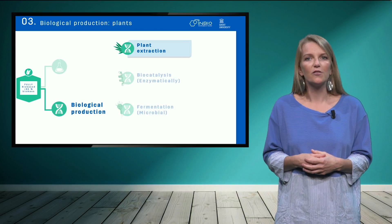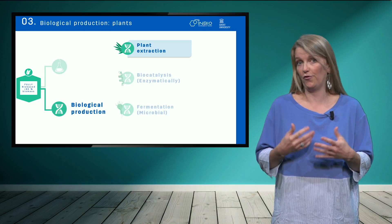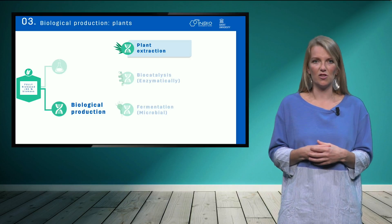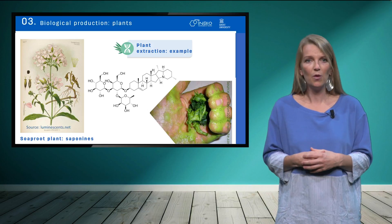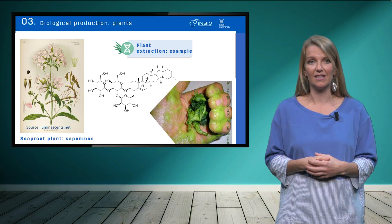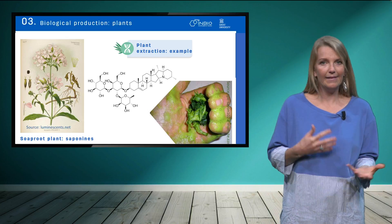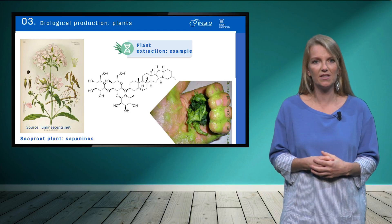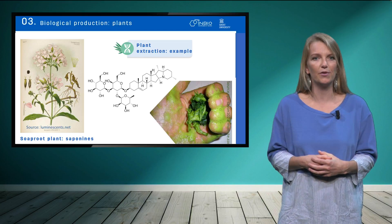The production of biosurfactants by plants was actually one of the first uses by humans of surfactants. Certain plants, such as the soap root plant, were already used 10,000 years ago when we still lived in caves. Rubbing the plant with water against the skin enabled these primitives to wash themselves. And going back to the roots, there is actually a renewed interest in these biosurfactants, mainly the so-called saponins.